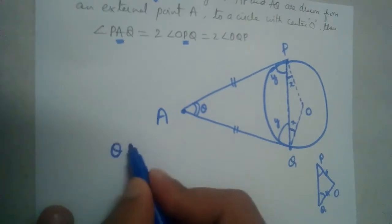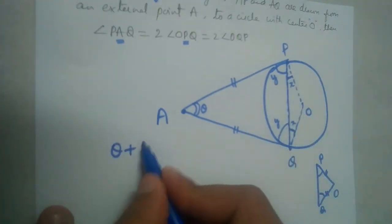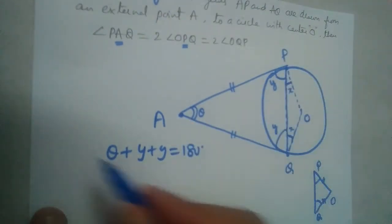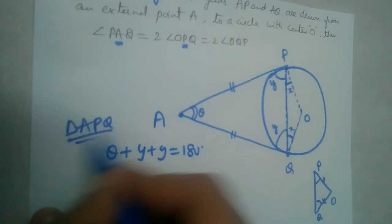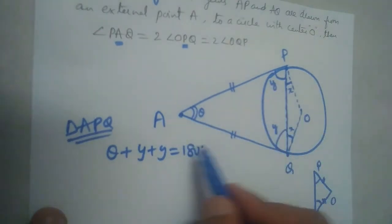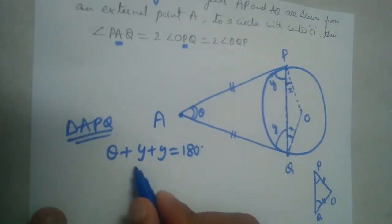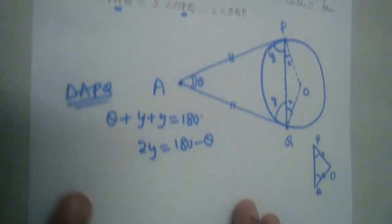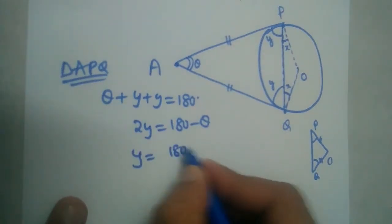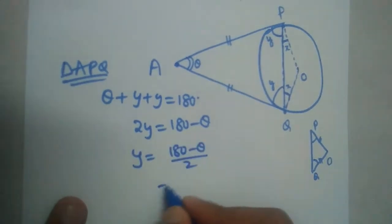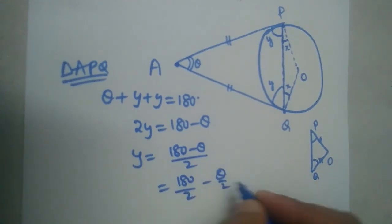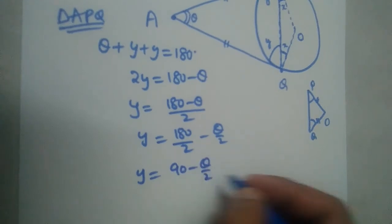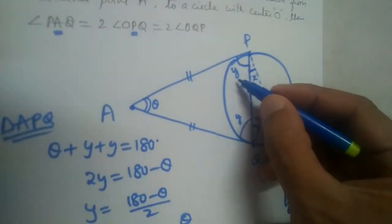In triangle APQ, the sum of the three angles should equal 180 degrees: angle theta plus y plus y equals 180 degrees. This gives us two y equals 180 minus theta. Therefore, y equals 180 minus theta divided by 2, which simplifies to y equals 90 minus theta by 2.